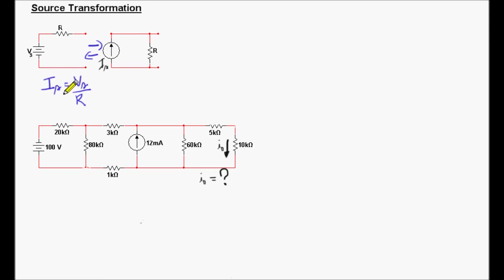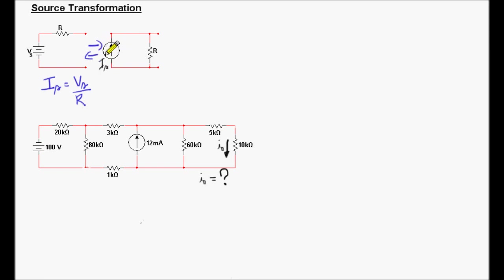So the current source must equal the voltage source value divided by the resistor value. When applying source transformation, we have to keep in mind two things. This method does not work if R equals zero, so we have to have a real value for the resistors. And the other thing is the arrow of the current source must point towards the positive terminal of the voltage source, and vice versa.